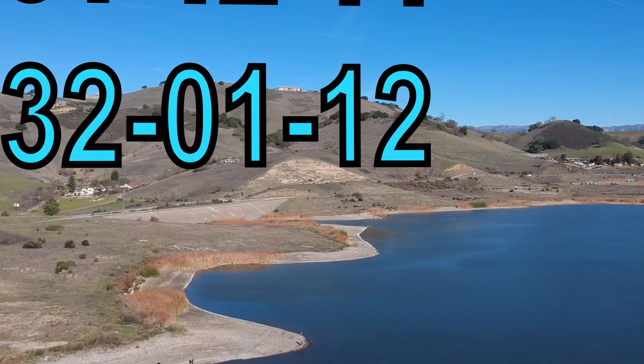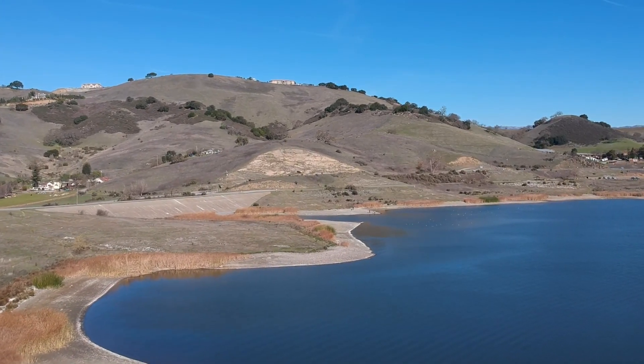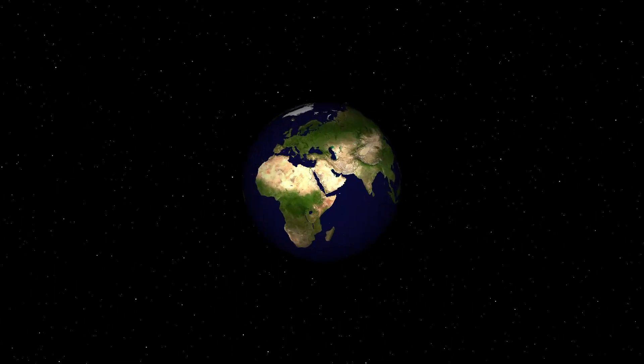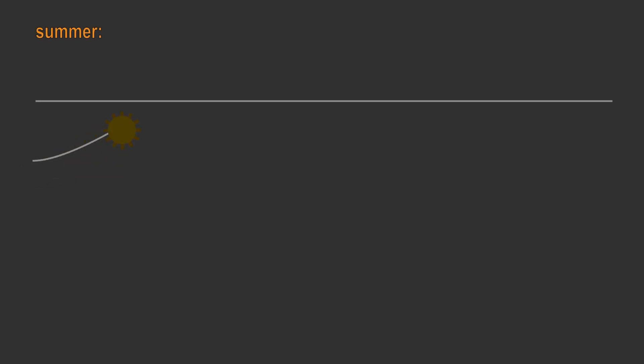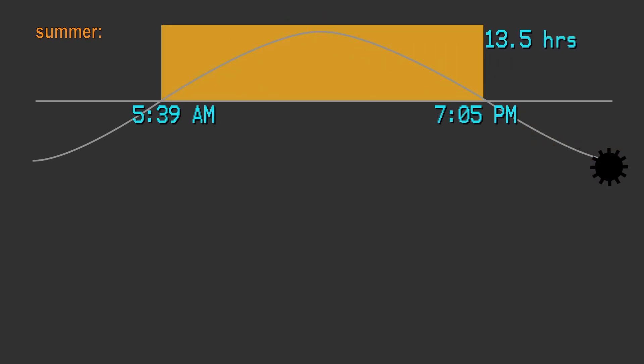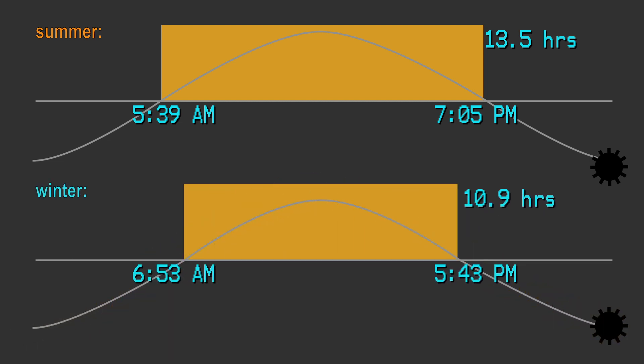This means that Muslims in the Northern Hemisphere won't fast as long in 2031 as they did in 2016. But it's more complicated than that — summer affects different parts of the world differently. If you live near the equator, daylight doesn't change that much between summer and winter. But if you live near the North Pole, summer days and winter days are drastically different in length. If we look at Mecca, Saudi Arabia, we see that it's only 21 degrees north of the equator. That means that during the summer Ramadan of 2016, Muslims there needed to fast for about 13 and a half hours, and during the winter Ramadan of 2031, Muslims there will need to fast for about 11 hours. So there really isn't that much of a difference in how long one needs to fast between summer and winter.